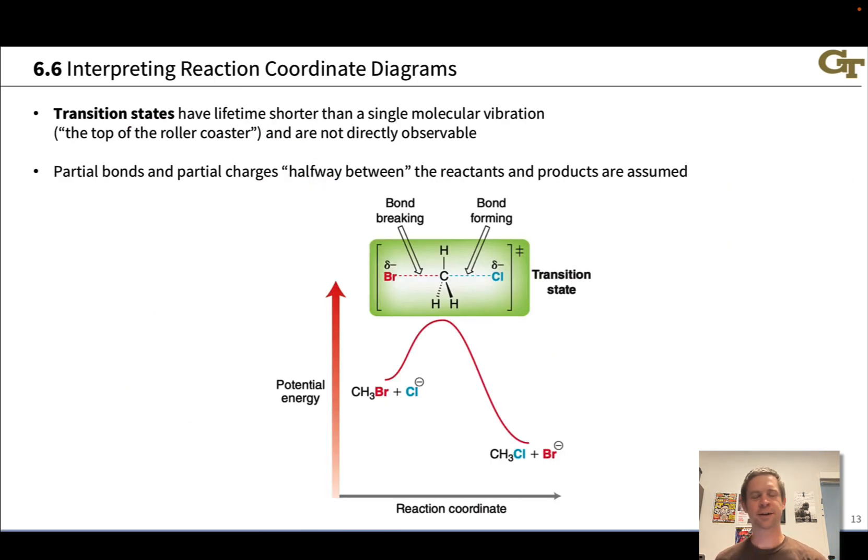Because transition states are energy maxima, any sort of change in the molecular geometry is going to lower the energy of that molecule. So transition states are actually not directly observable. They have a lifetime that's shorter even than a single molecular vibration. That's something like less than one femtosecond, less than one times 10 to the negative 12 seconds. So we can't observe them directly, but we can infer their structures from the reactants and products of the elementary step by saying that at the top of the roller coaster, halfway between the reactants and products, roughly speaking, we're going to have partial bonds and partial charges. Bonds being made and broken are going to kind of be halfway along those processes. And as charges are shifting, charges are going to be incompletely shifted from one atom to another.